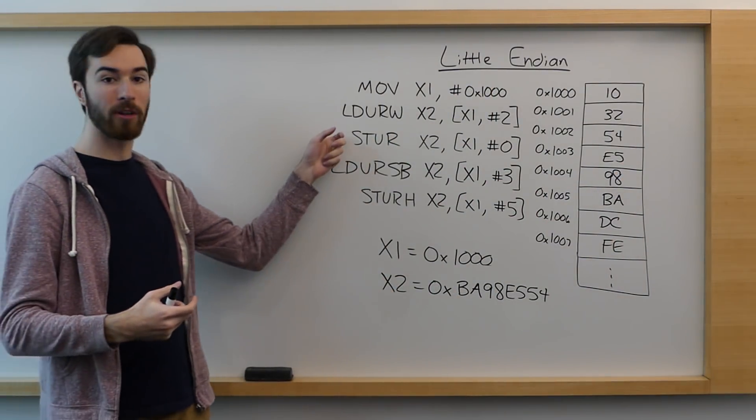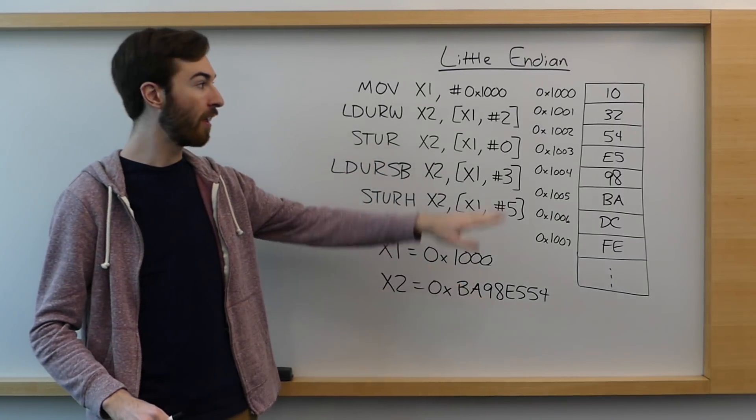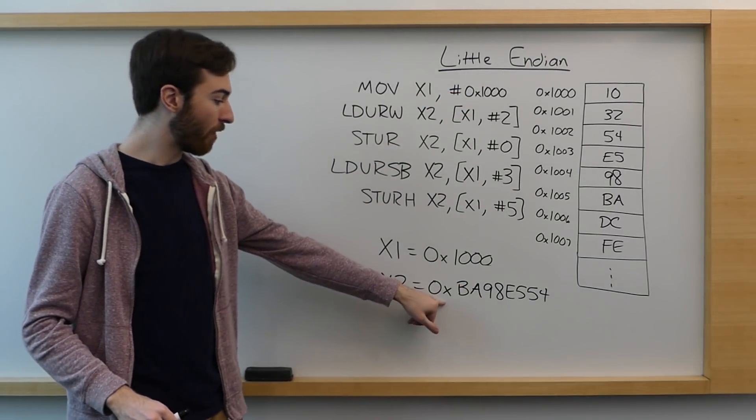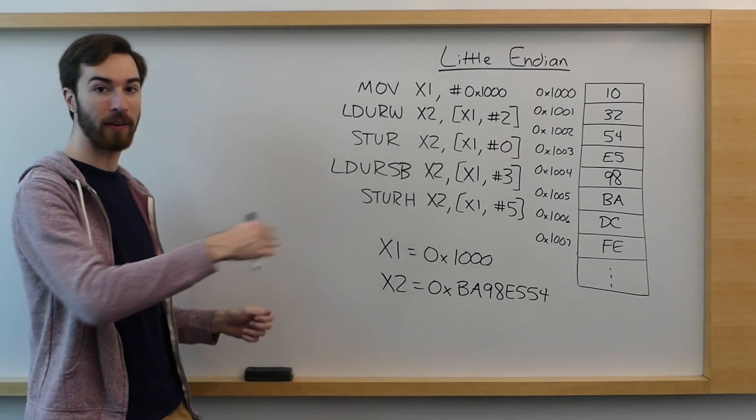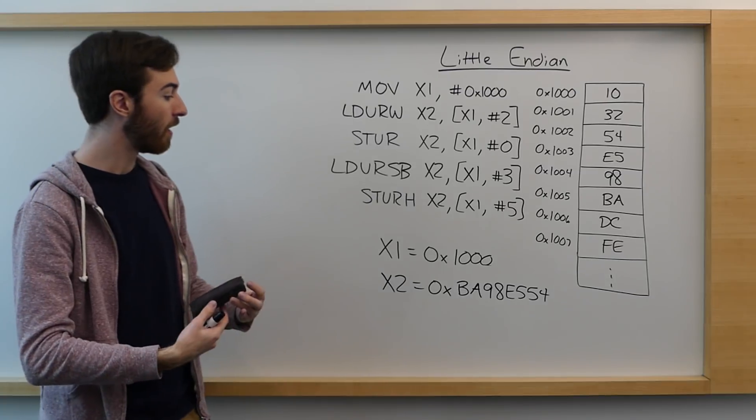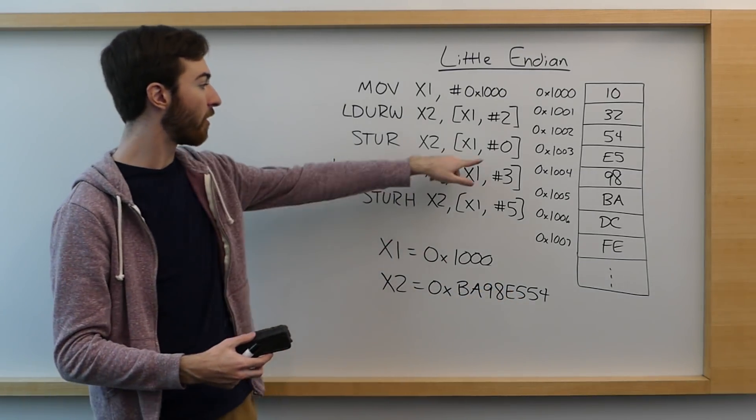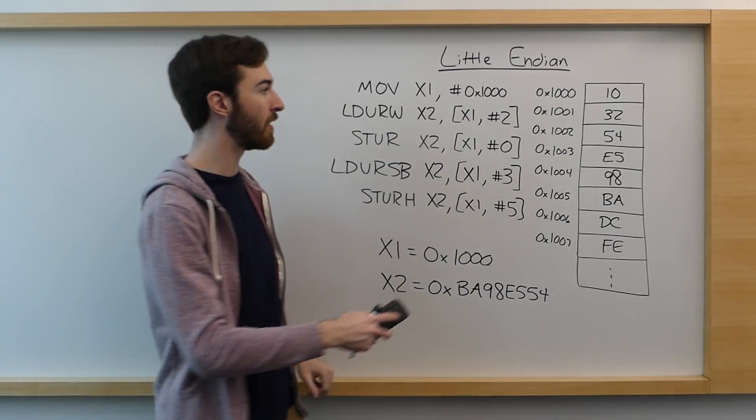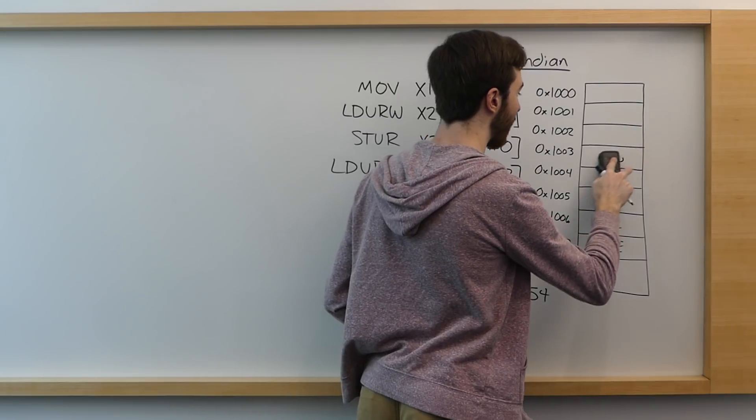Now we go to the store command, and this is a normal store command. It'll store the entire register to memory. And remember that this really, you can think of it as having leading zeros to fill in the extra 32 bits. So if we store all 8 bytes to memory, starting at memory address 1000 because it's an offset of 0, we'll need to overwrite every single memory address.